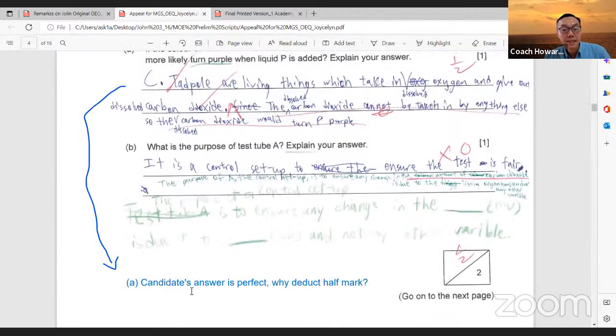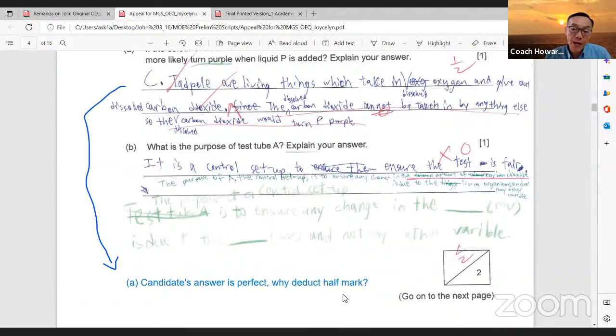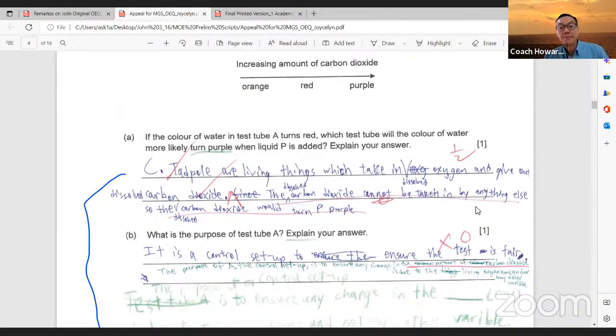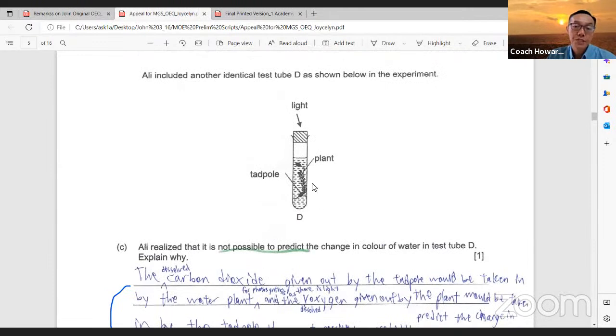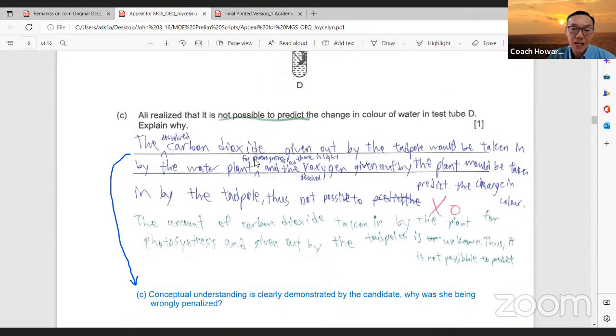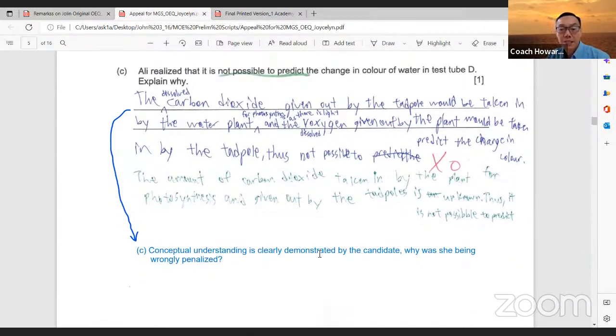In part A, the candidate's answer is perfect. I asked the school, why deduct half mark? Perhaps the handwriting is not very neat. But you can actually accept her answer. I recommend another remark of these answers provided. Ali realized that it is not possible to predict the change in color of water in test tube D. Explain why. Personally I do not like this phrase, explain why. Conceptual understanding is clearly demonstrated by the candidate. Why was she being wrongly penalized?